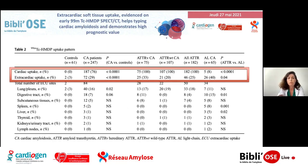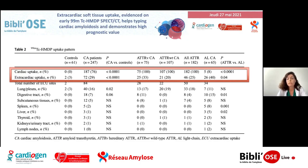Dans les résultats, la fixation cardiaque est présente dans 100% des cas dans l'amylose à transthyrétine, qu'elle soit sauvage ou mutée. La fixation cardiaque dans l'amylose AL est beaucoup plus rare, ici de 8%, ce qui est concordant avec les séries aux alentours de 10%. La fixation extracardiaque dans l'amylose AL était beaucoup plus fréquente, principalement dans les fixations digestives, hépatiques ou spléniques. Les fixations pulmonaires, par contre, étaient assez fréquentes aussi bien dans l'amylose AL que transthyrétine.